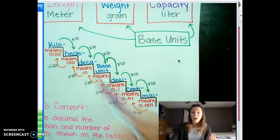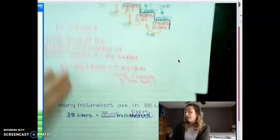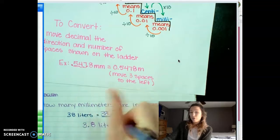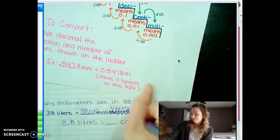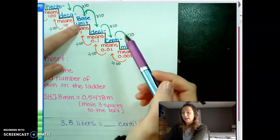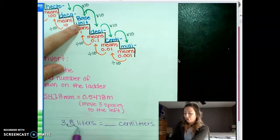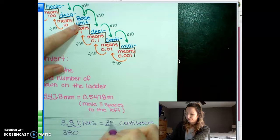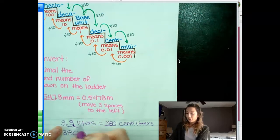If you have a decimal, like 3.8 liters, and want to know how many centiliters, you do the same thing. Start at the base unit liter and go down two steps to centi, which means you move the decimal two places to the right: 3.8 becomes 380 centiliters.